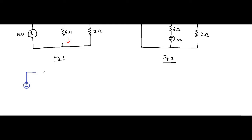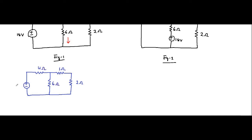The circuit has an 18 volt source, a 4 ohm resistor, a 6 ohm resistor, then a 1 ohm and 2 ohm resistor. We have to determine the current — let's say this is I1, this is I2, and this current is I. First, we have to determine the equivalent resistance with respect to the 18 volt voltage source.